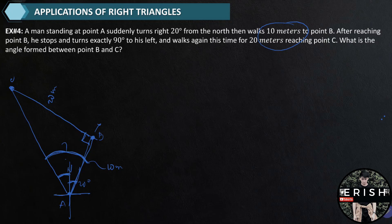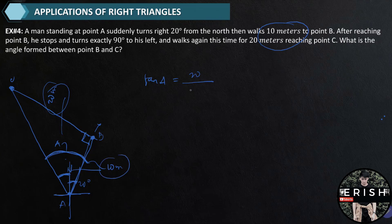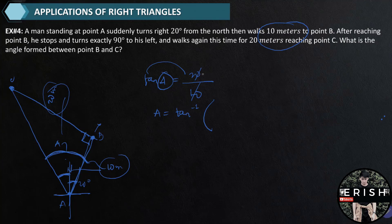To solve for that angle, we use the tangent function. Let this be angle A. Tangent A equals opposite over adjacent — the opposite is 20 meters and the adjacent is 10 meters. So tangent A equals 20 over 10, which simplifies to 2. Solving for angle A, we get angle A equals arctangent of 2. By calculating, angle A is equal to 63.4 degrees.